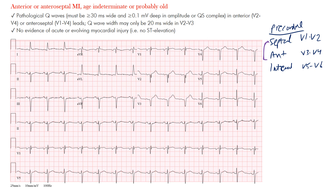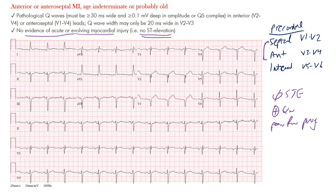For an anteroseptal MI we're looking at V1 to V4. Since this is not an acute MI, we do not want to see ST elevation. What you do want to see are pathological Q waves. You'll also likely see poor R wave progression, since the anterior portion of the left ventricle is involved. No evidence of acute or evolving MI — no ST elevation, no injury pattern.